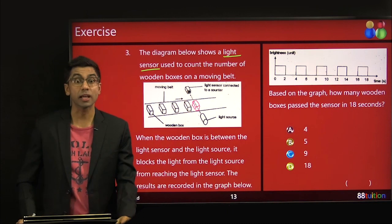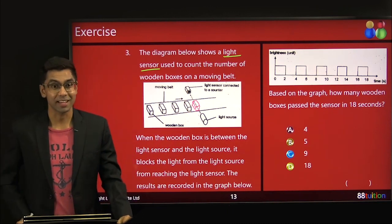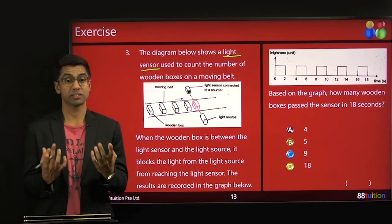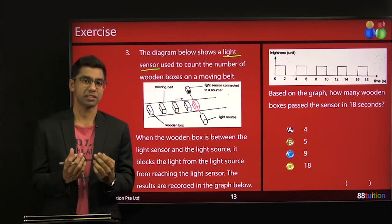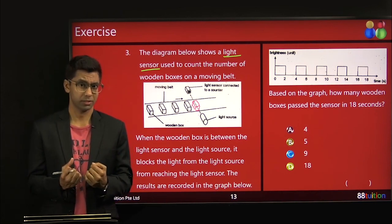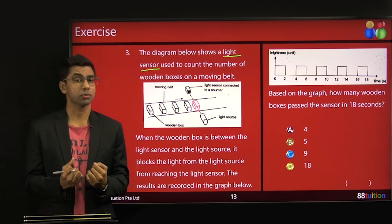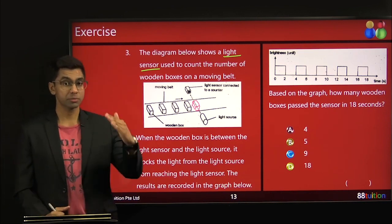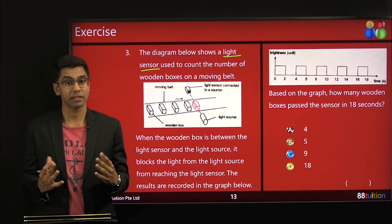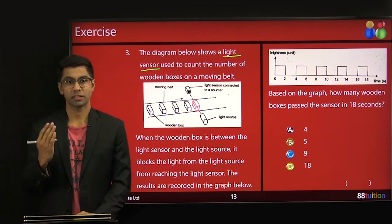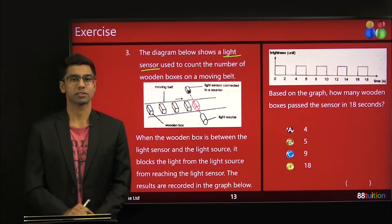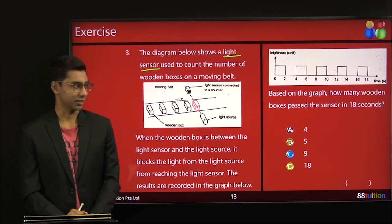Therefore, this guy sensor says, hey, what happened to the light? I can't detect any light. Zero, right? The reading is zero. So every time a box comes and blocks it, the reading is zero. Get it? So we can count how many boxes there are because every time the reading goes to zero, there's no light. Right? That's one box. Then the next box comes and then zero again. Two box. Simple.